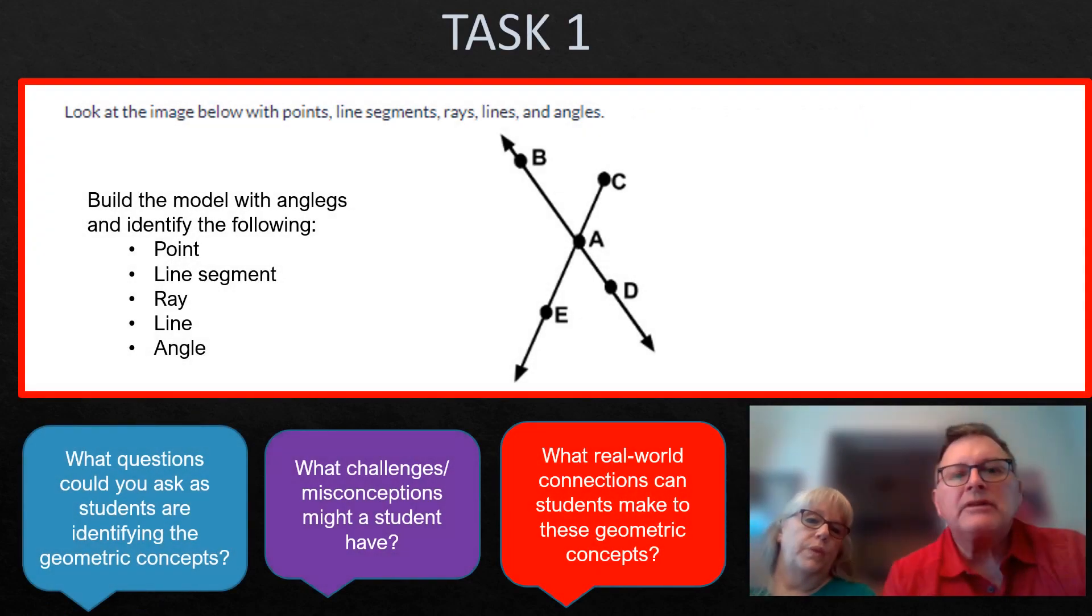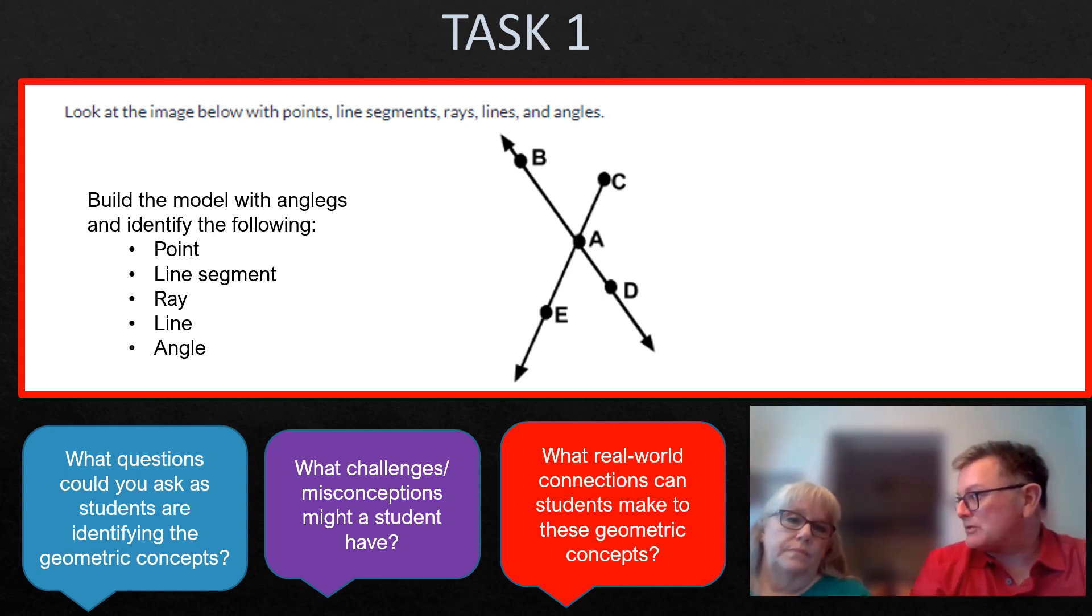Let's take a look at this now. Some teachers may have built a model of this. They may have used popsicle sticks or drew a representation of this with labeling the points on the line. With the task here, they were to build the model with anglegs and identify the following. What's important here is when we think about a point, you identify a point. There are several points on this slide: A, B, C, D, and E, and they're all represented with that dot. It looks like a period, or a decimal point. And it's important that students are able to notate the points with this kind of notation, right? That it is a point somewhere on a line or a line segment or on an angle.